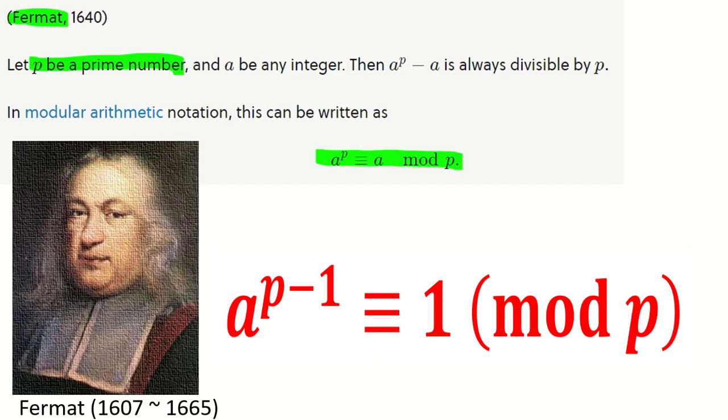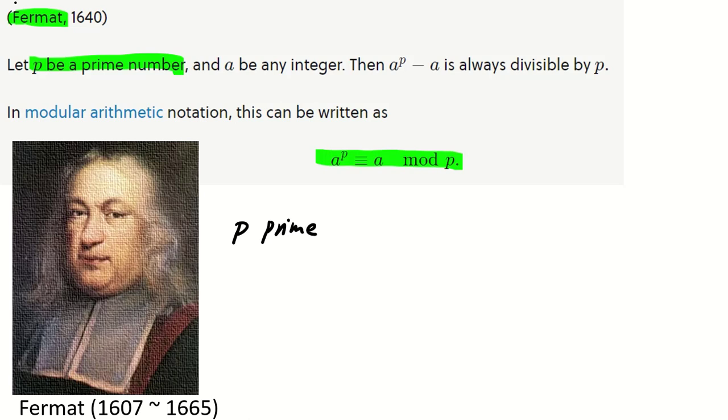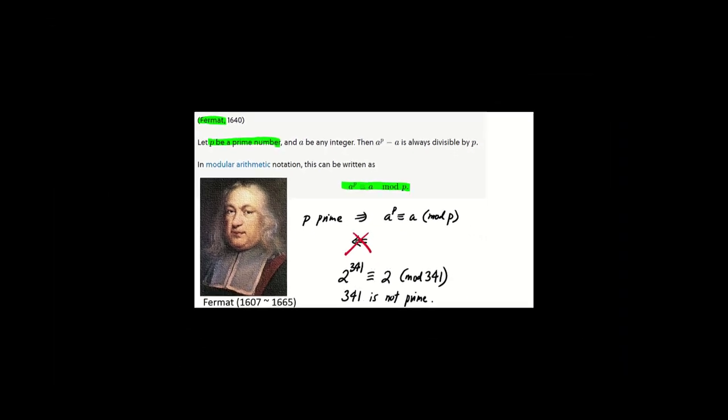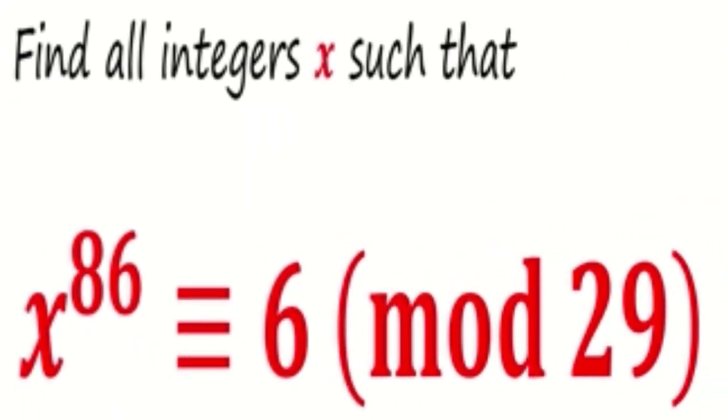Note that this statement is an if-then statement, which means it is not an if-and-only-if statement. This means that if a^p ≡ a (mod p), p may not be a prime number. Here is an example: note that 2^341 ≡ 2 (mod 341); however, 341 is not a prime number.